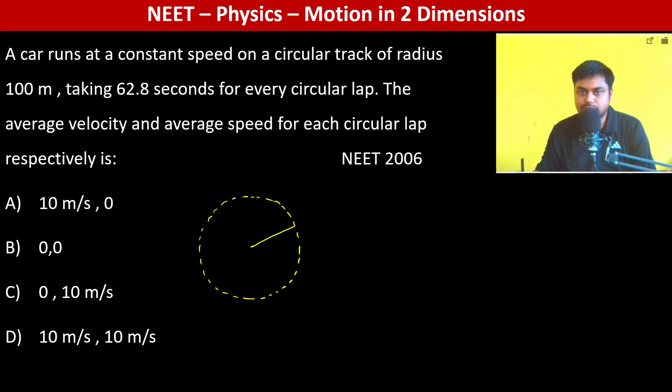The average velocity and average speed for each circular lap need to be found. Let's say it starts from here and ends up here again. Therefore, the displacement is going to be 0.